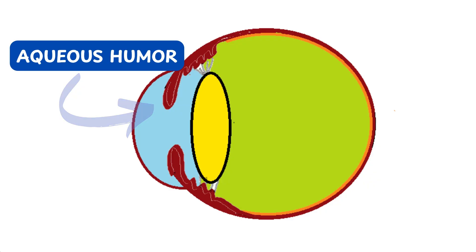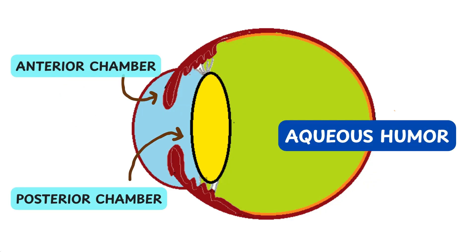The compartment which is anterior to the iris is known as the anterior chamber, and the compartment posterior to the iris and ahead of the lens is known as the posterior chamber.